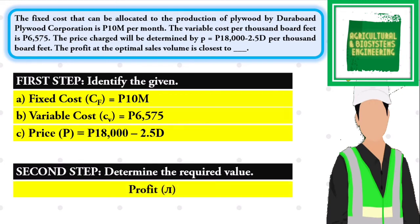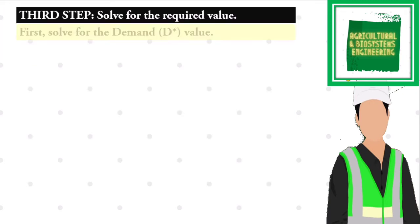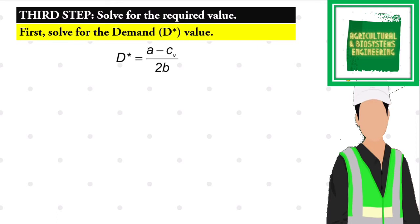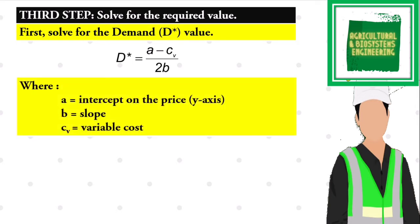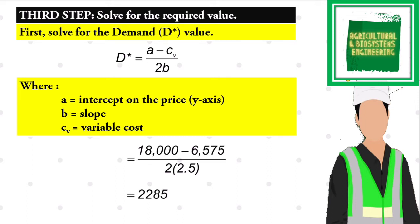To solve for profit, we first need to compute the demand. We use the formula: D = (a − CV) / (2b), where a is the price-axis intercept, b is the slope, and CV is the variable cost. Substituting values: D = (18,000 − 6,575) / (2 × 2.5). Solving gives a demand of 2,285 thousand board feet.